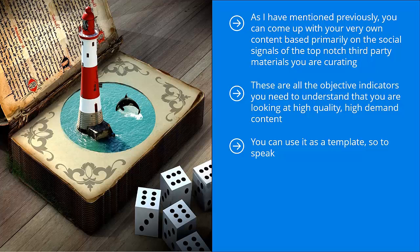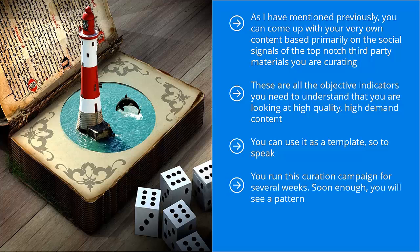Another approach would be to just do curation first. You take all the high-quality third-party content with great social signals and put them all on auto-publish on your social media accounts. You run this curation campaign for several weeks. Soon enough, you will see a pattern. Eventually, you will see that some of these materials get a lot more engagement than others. At that point, you can then come up with your own version.